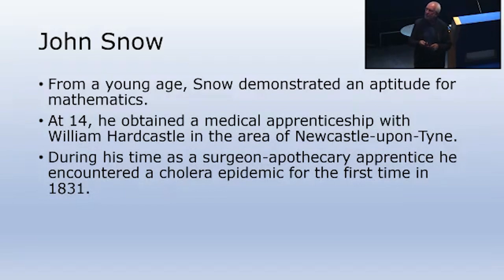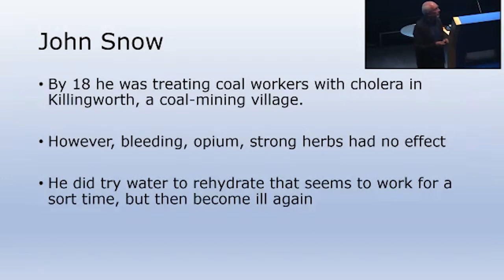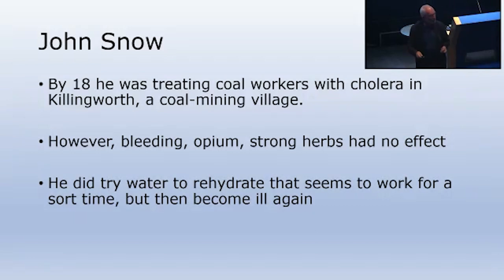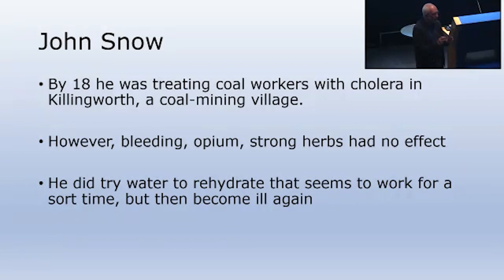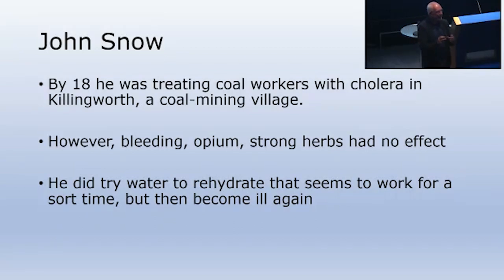During his time as a surgeon's apprentice he encountered cholera for the first time in 1831, when cholera reached Britain at the port of Sunderland. By 18 he was treating coal workers with cholera in Killingworth, a small coal mining village not far from Sunderland. He tried the usual remedies — bleeding, coloured water, opium, herbs — they didn't really work. However, what Snow did do was try to rehydrate people with clean water, and that actually worked, though people became ill again. It appears he had a good understanding right back in 1831 not only of its cause but also its cure.